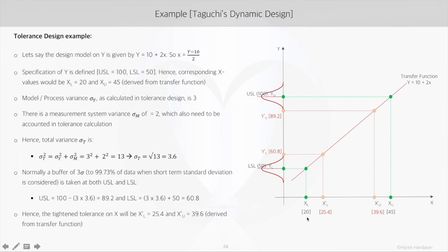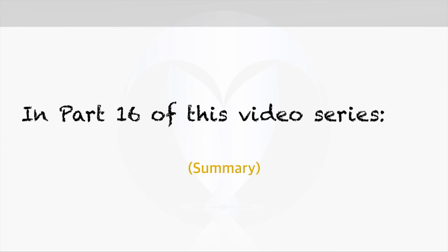So for x, the tighter tolerances are 39.6 to 25.4, compared to the earlier range of 45 to 20. If we control x within this tighter tolerance, y will be robust. This is how tolerance design works.